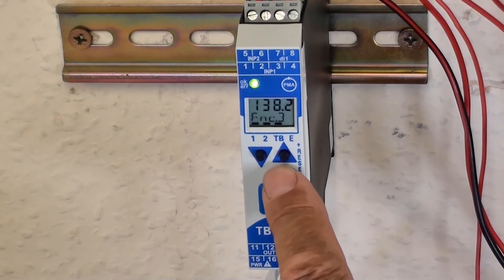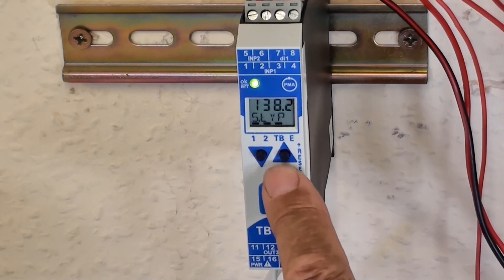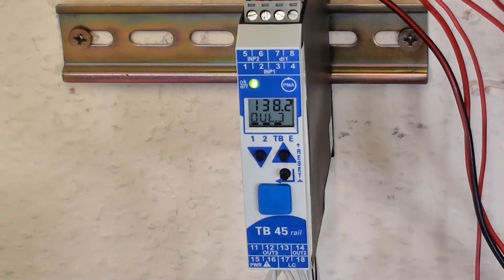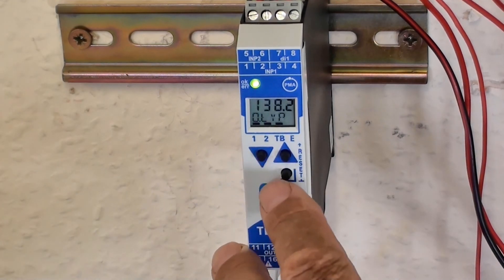And so on. We can just go through the various menus and set the various outputs and so on. So, Output 3, for example, I've selected that as a 4-20mA output.